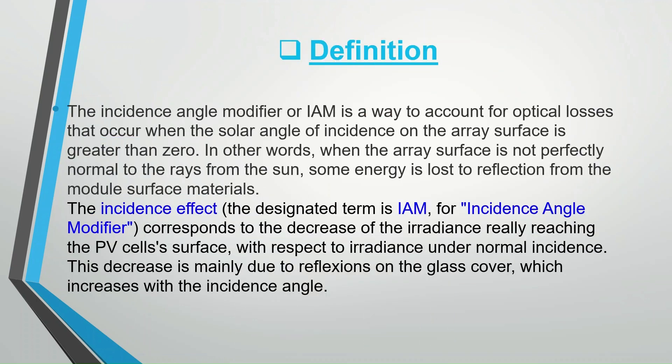The incidence angle modifier, or IAM, is a way to account for optical losses that occur when the solar angle of incidence on the array surface is greater than zero. In other words, when the array surface is not perfectly normal to the rays from the sun, some energy is lost to reflection from the module surface materials.